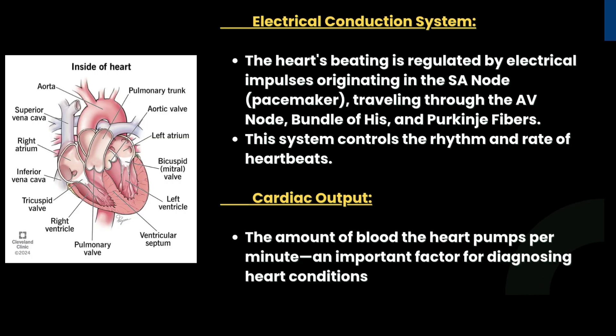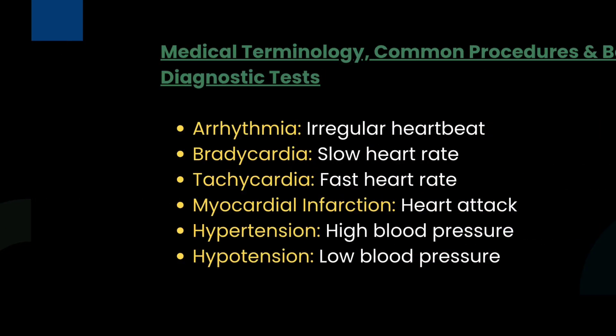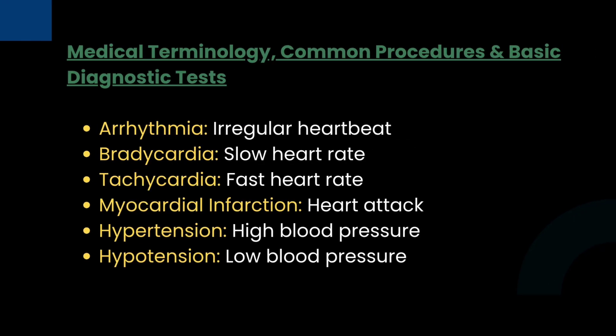Cardiac output refers to the amount of blood pumped per minute. Key medical terminology includes: arrhythmia — irregular heartbeat; bradycardia — slow heart rate; tachycardia — fast heart rate; myocardial infarction — heart attack; hypertension — high blood pressure; and hypotension — low blood pressure.